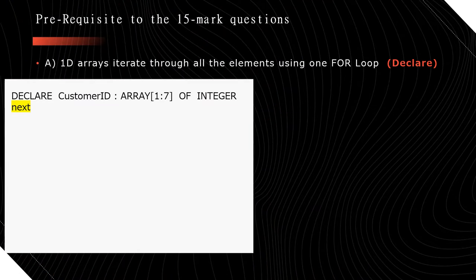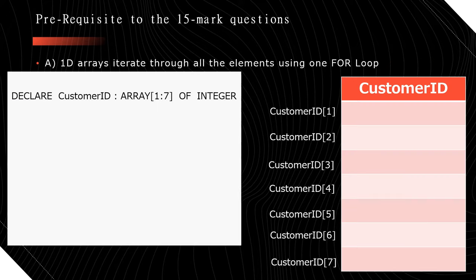Let's start with 1D arrays. Let's say we have this array called CustomerID. We're going to declare CustomerID of type array from 1 to 7, so there are 7 pieces of data and they're all of type integer. Your computer has allocated some space, given it a name called CustomerID, and it's ready to receive 7 integers. The first data can be accessed by CustomerID[1], the second by CustomerID[2], and so on till CustomerID[7].